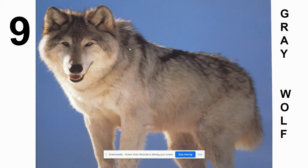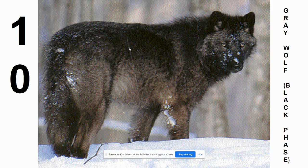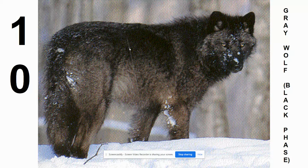Number nine is the gray wolf, and so is number ten — much like the red fox, gray wolves have different color phases. Because they're called the gray wolf, most of them are gray. However, once in a while you'll get one with the correct gene combination and you can get a black phase gray wolf. It still is a gray wolf, just darker looking.